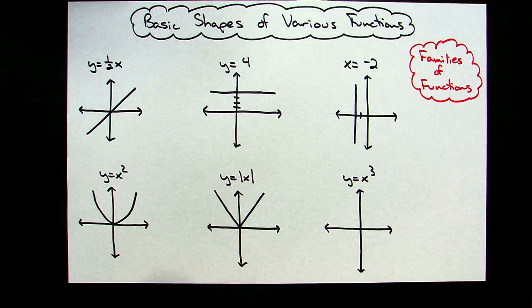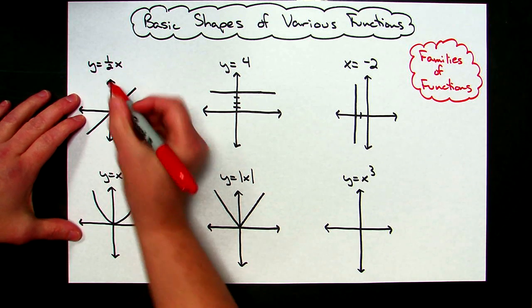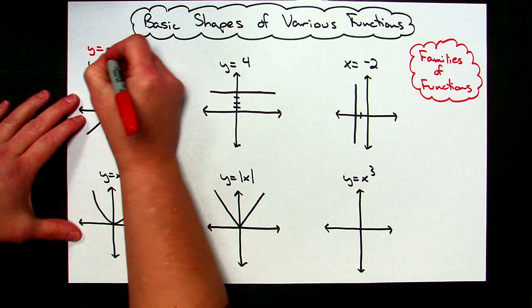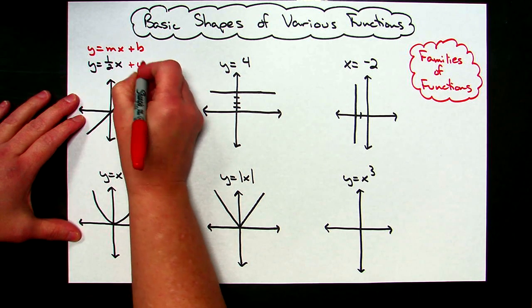For the top three examples here I've got y equals one-half x. Hopefully you're recognizing that as being like y equals mx plus b, in this case which I would have a plus zero here.